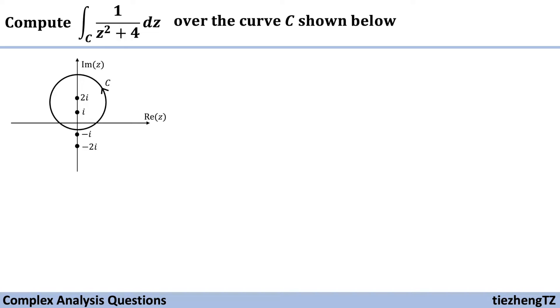This question is to compute the integral 1 over z squared plus 4 dz over the curve C shown here. Very similar to our previous question, we have the function and the contour. However, it is difficult for us to find the antiderivative of the given function to directly solve it. So in this case, we are going to use a theorem to help us solve the question.